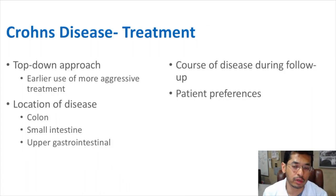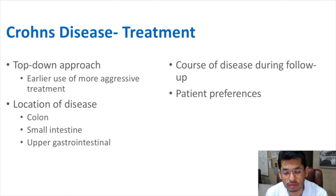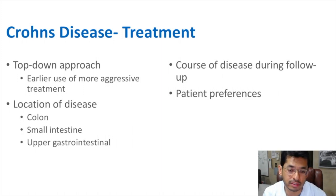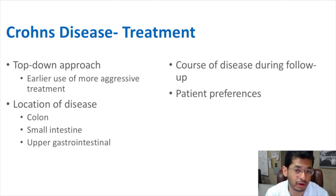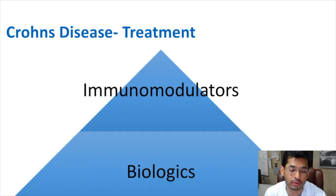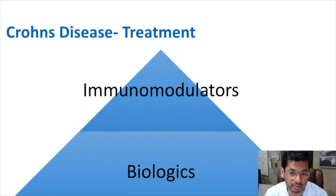For patients who don't do well on 5-ASAs, we can escalate therapy to the immunomodulators or biologics. Crohn's disease is a little different in that you want to take a top-down approach — you want to be more aggressive. Earlier use of more aggressive treatments tends to do better for patients with Crohn's disease. It also depends on the location of the disease, whether in the colon, small intestine, stomach, or esophagus. Some patients prefer to avoid IVs, and we have other options. The two main classes for Crohn's are immunomodulators and biologics, and once patients do well, we have the option of possibly de-escalating therapy.